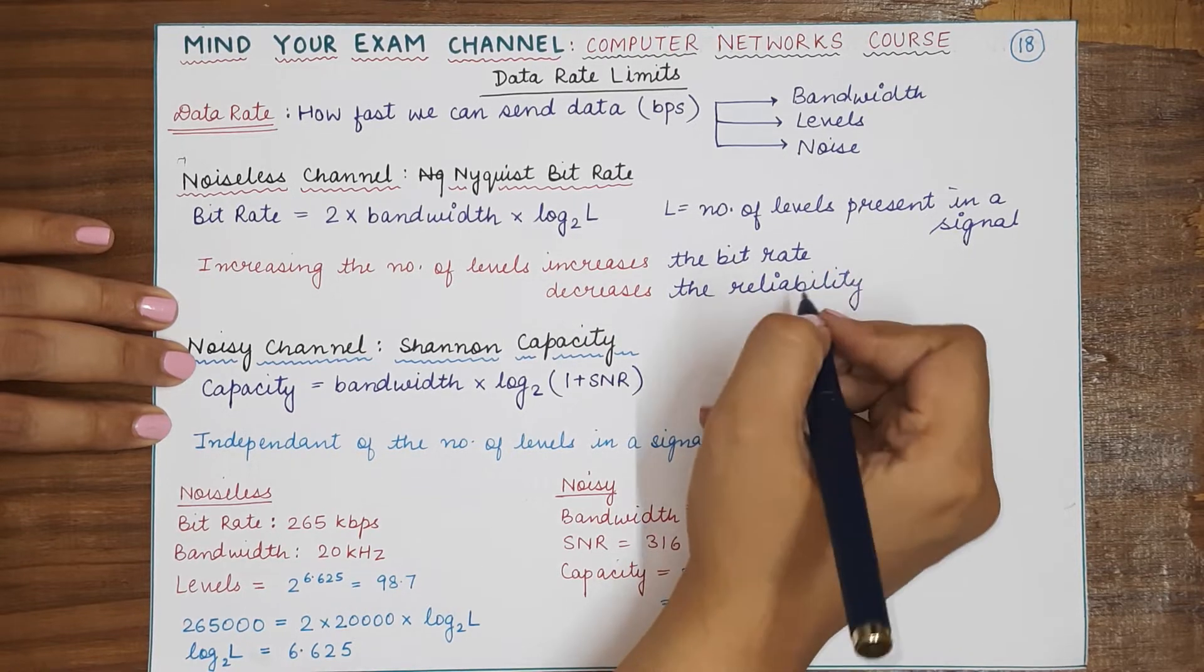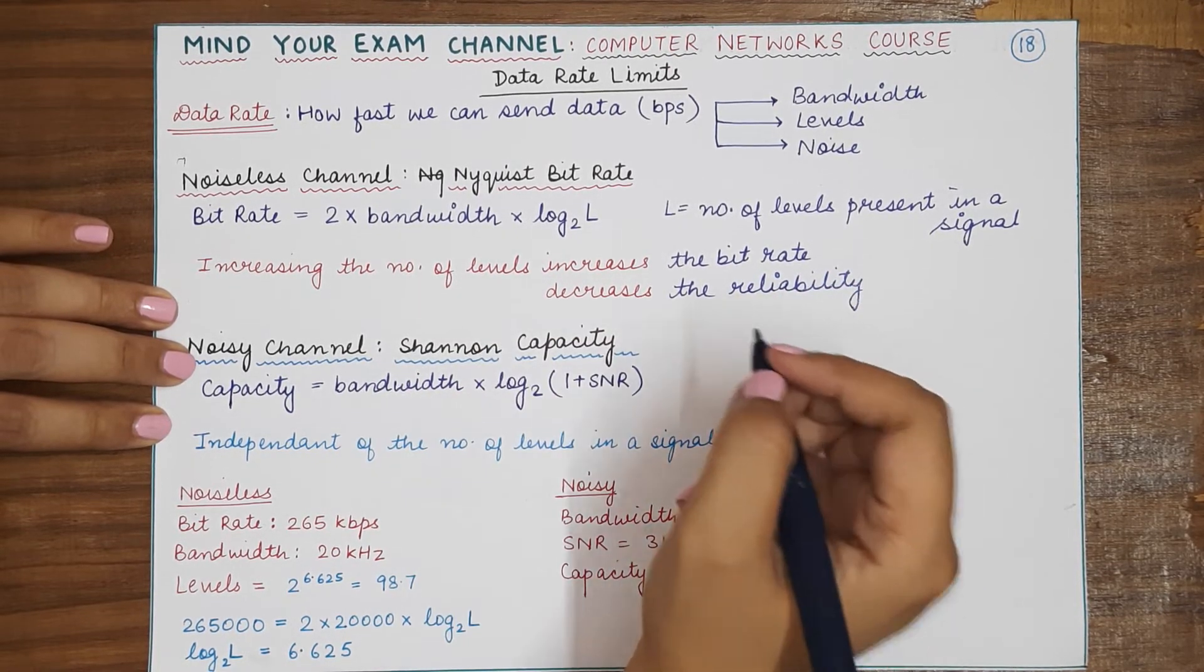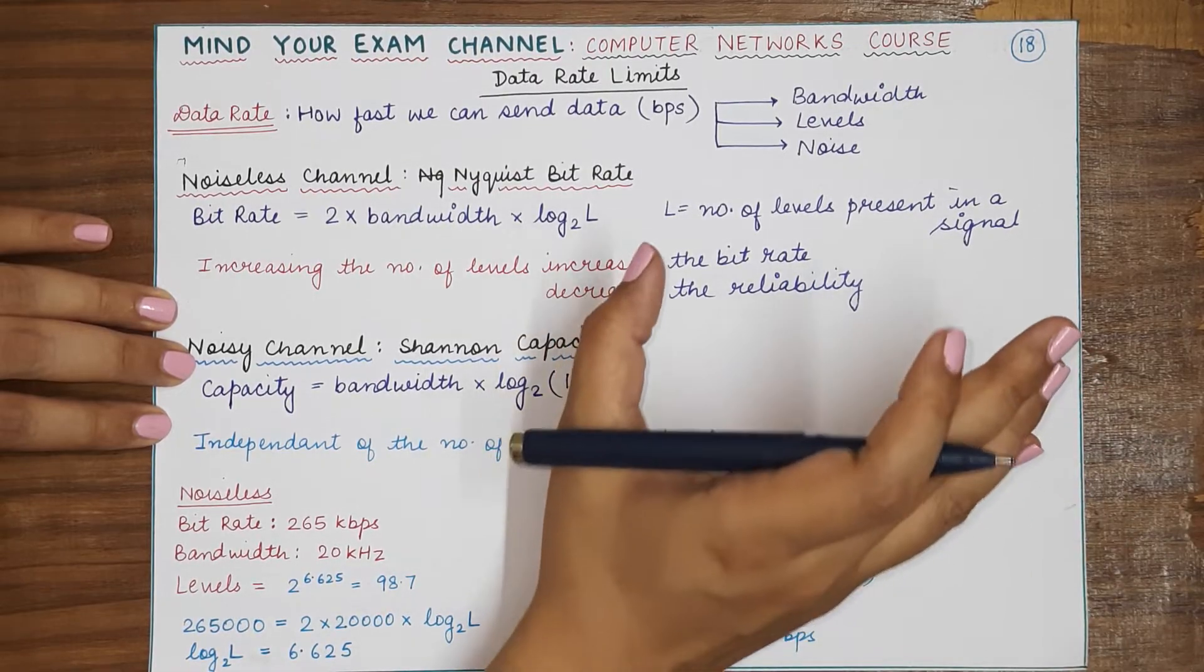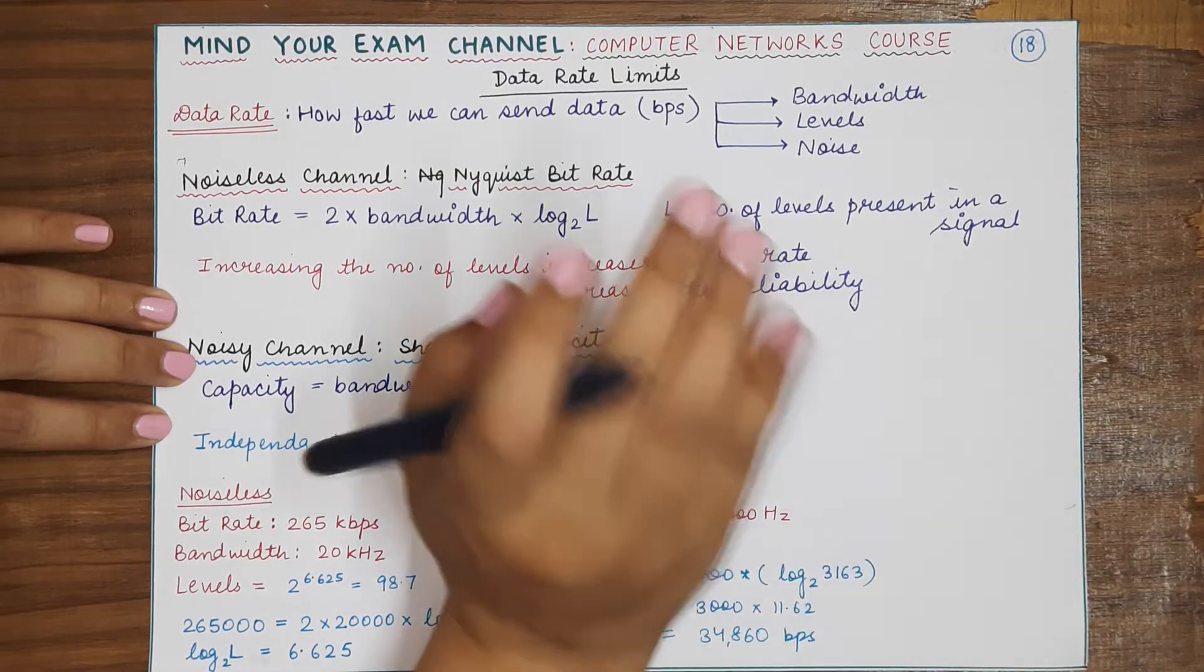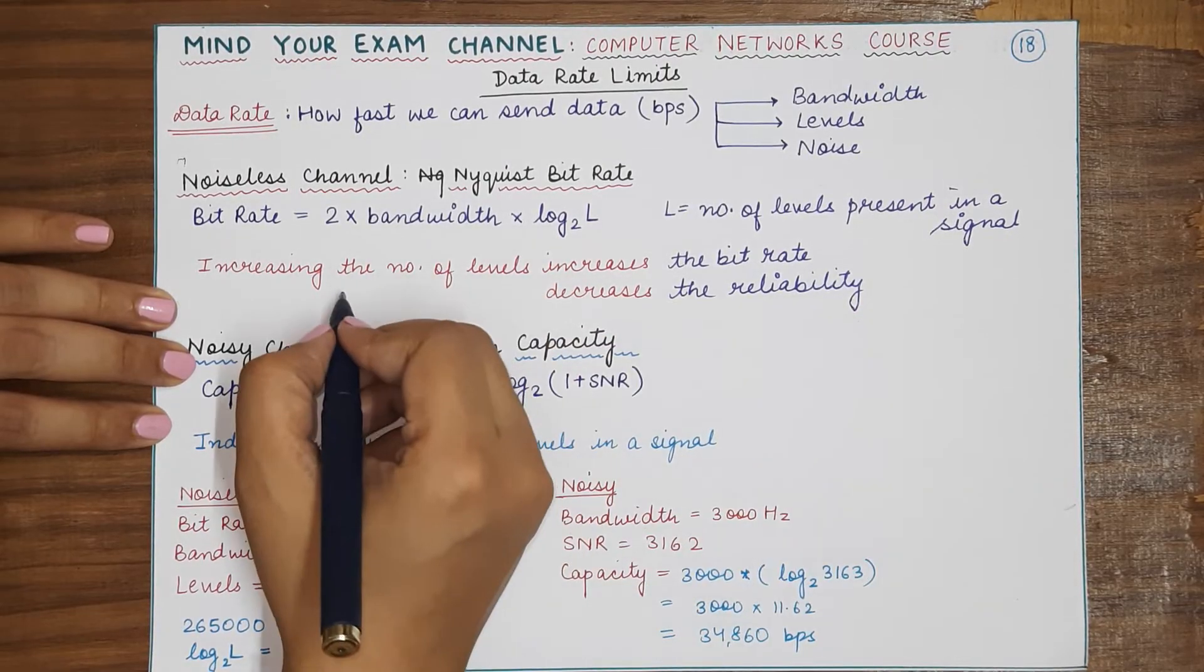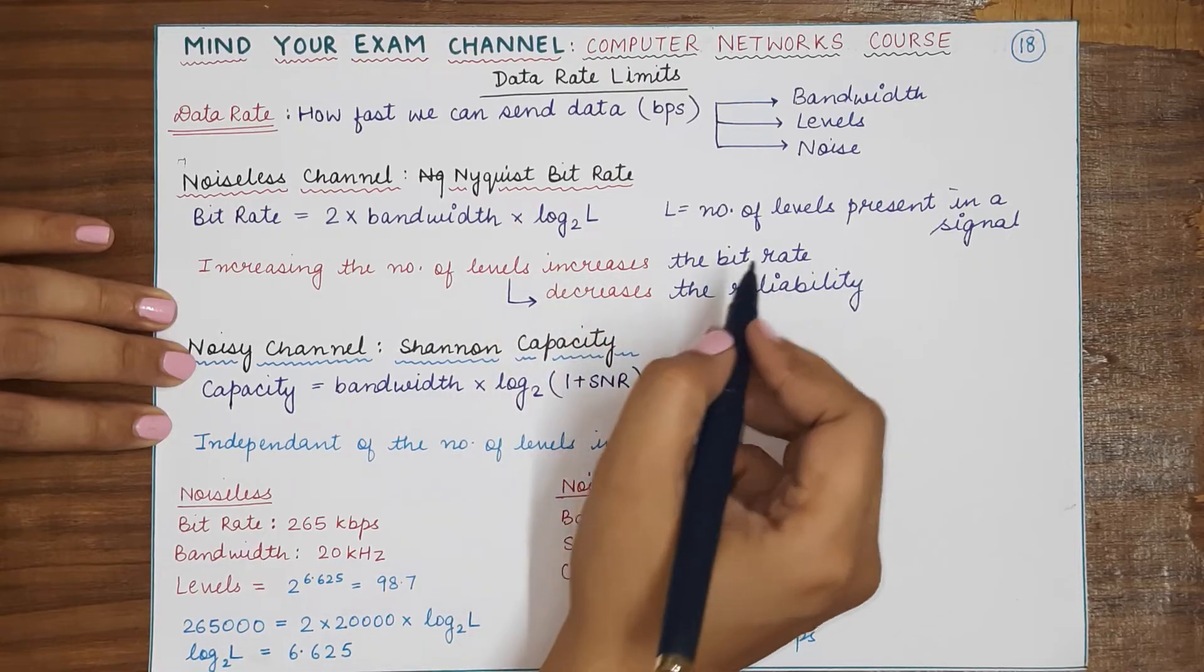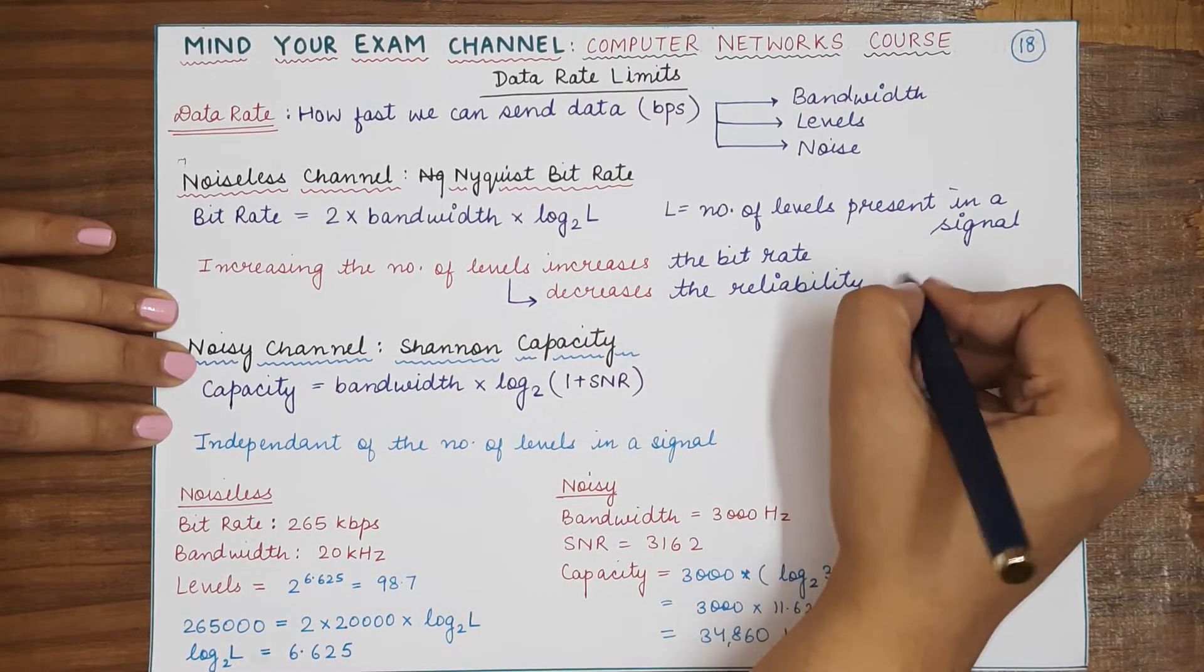Because the transmission or the signal has become more complex now, and the receiver is expected to correctly decode all the different levels and the information contained in them. So increasing the number of levels increases the bit rate but it also decreases the reliability of a channel.